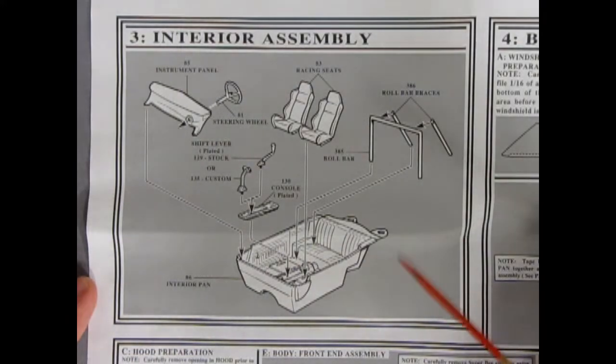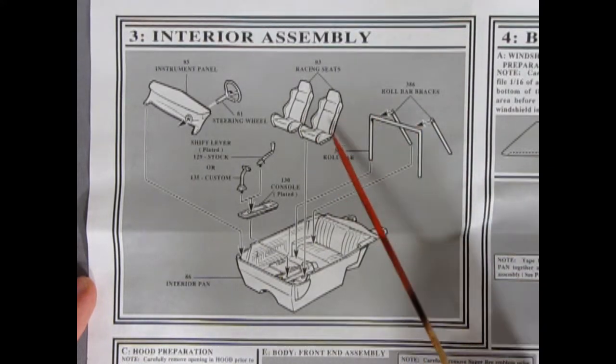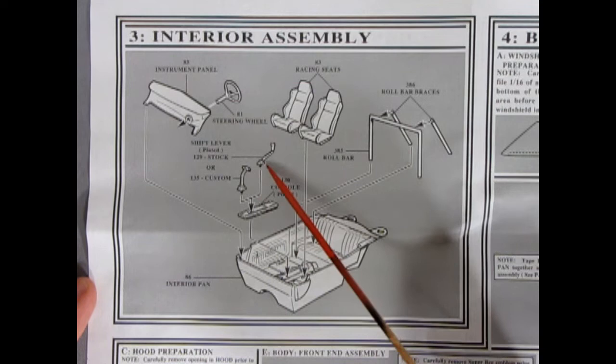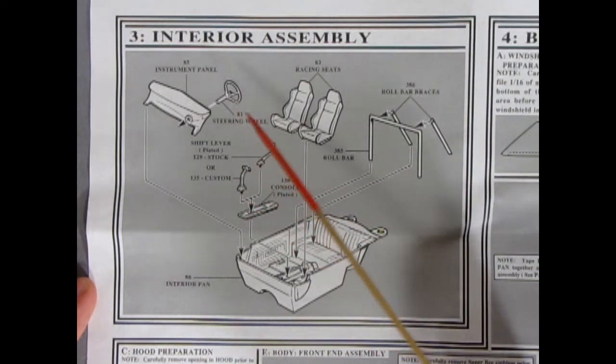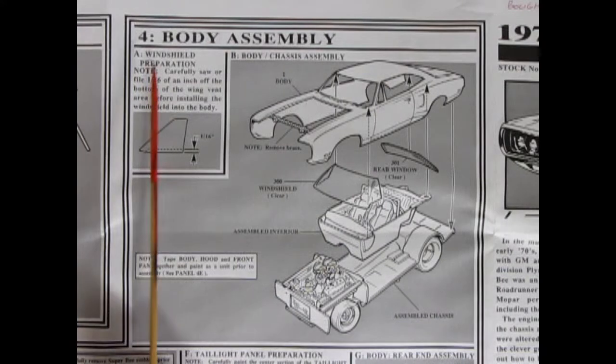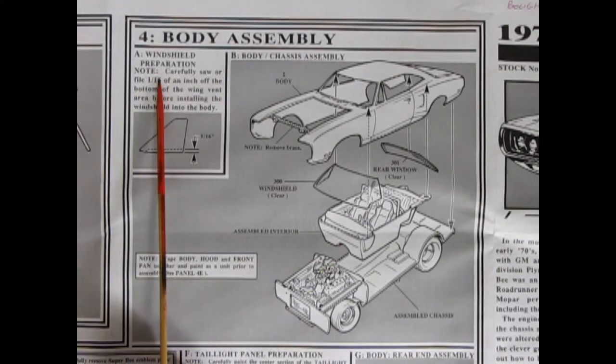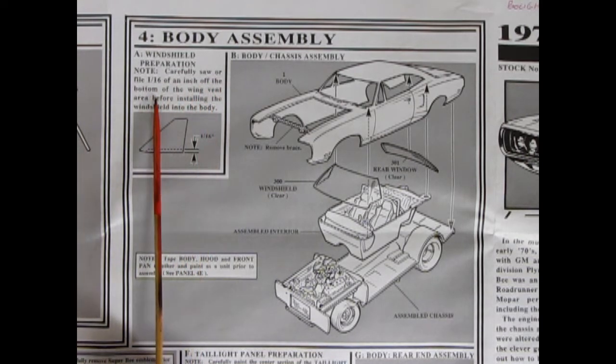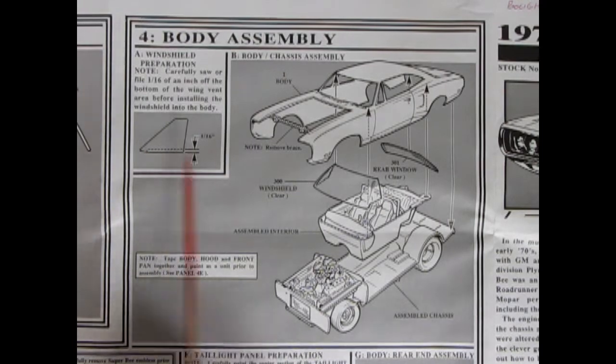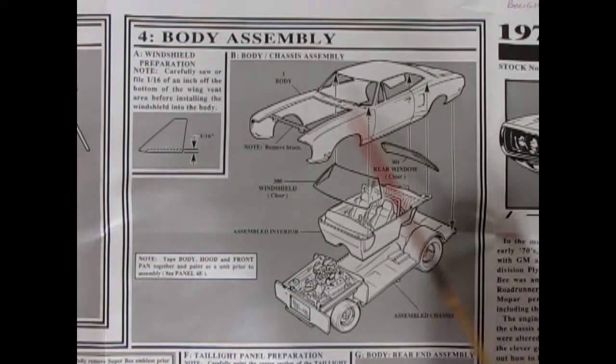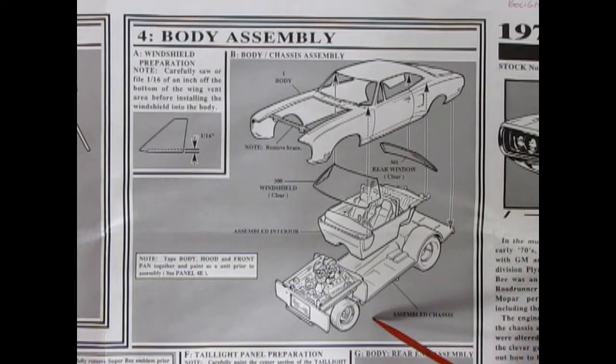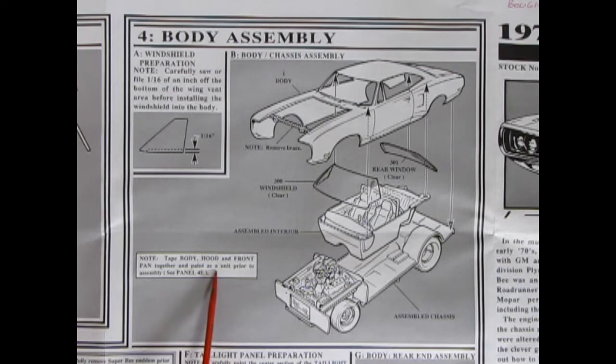And here's the zone where you will be chillaxing right in this big monster mobile with these dual racing seats. The roll bar with braces. Here we got our console. You got your choice of shift levers. You can either use a pistol grip or the regular custom. And your steering wheel and your dashboard. This all goes into your groovy pad. And here in step four we do a little glass preparation. It says windshield preparation note. Carefully saw or file one sixteenth of an inch off the bottom of the wing vent area before installing the windshield into the body. So you got to cut this little piece out here. And then it should be good to go. You're going to get your car body. You're going to cut out the center brace. Put your windows up in here. Hook the whole thing into your tub and drop it right on your chassis. It says tape body, hood, and front pan together and paint as a unit prior to assembly.